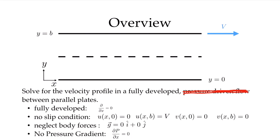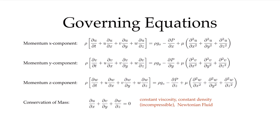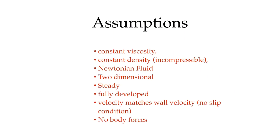Our governing equations are the Navier-Stokes equations — in principle, three dimensions with x, y, z components of momentum — and our conservation of mass equation. In the derivation of the momentum equations, we assumed constant viscosity, constant density, and a stress-strain rate relationship for a Newtonian fluid. Let's reduce these equations to the simplified form that gives us Couette flow. Starting with our assumptions: constant viscosity, incompressible or constant density flow, and the fluid is Newtonian.